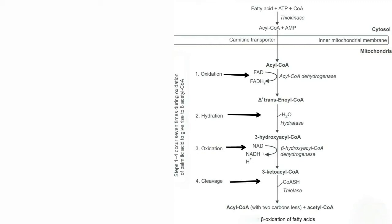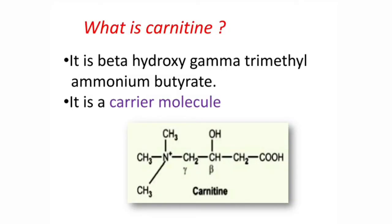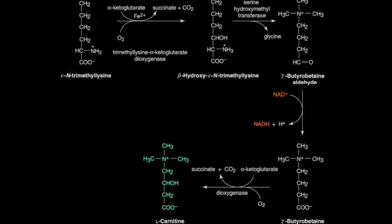To overcome this problem, a carrier molecule — a transport molecule — is required. This transport molecule is carnitine. Because it is involved in the transport of fatty acids, this is known as the carnitine shuttle or carnitine transport system. Chemically, carnitine is beta-hydroxy gamma-trimethyl ammonium butyrate. It acts as a transporter.